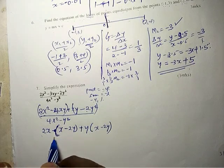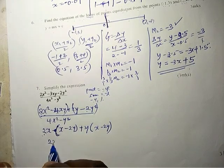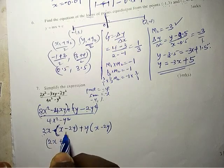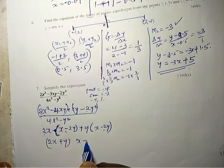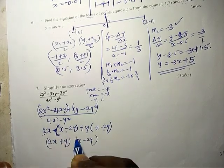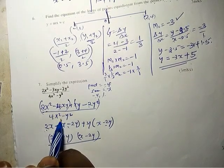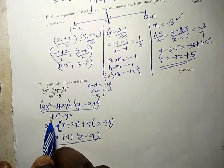Actually this one will give us 2x plus y times (x - 2y) divided by... this is a difference of two squares, so this simply means...